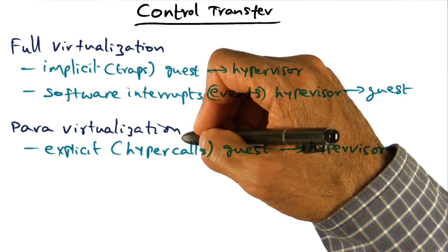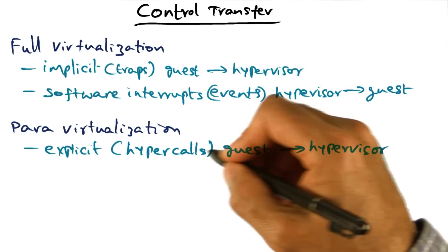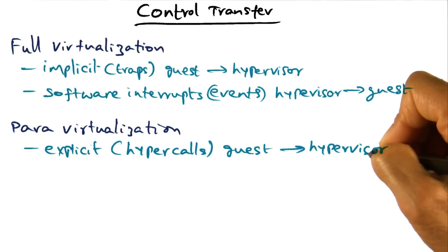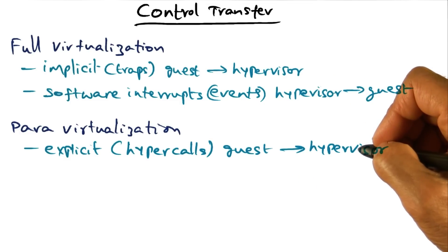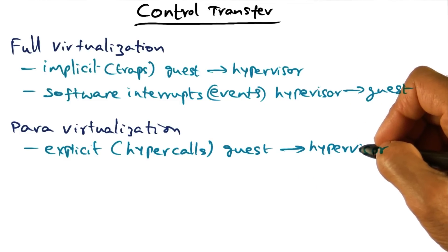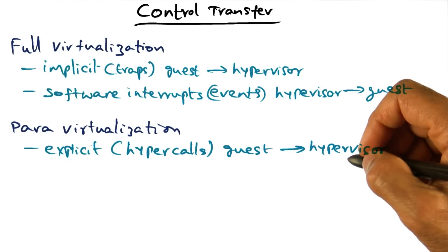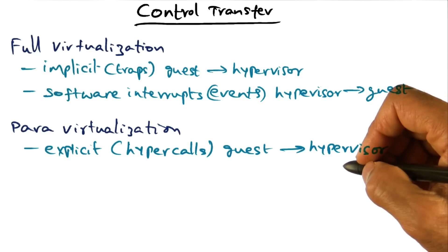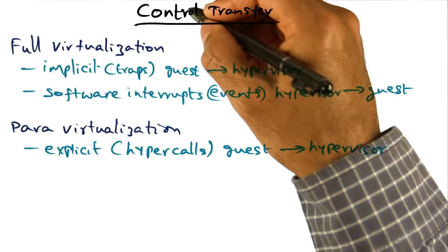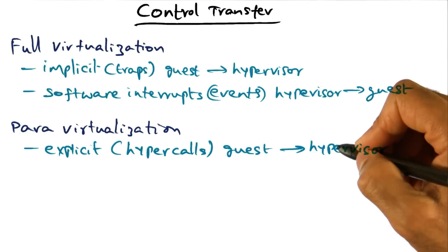In a para-virtualized setting, the control transfer happens explicitly via hypercalls from the guest into the hypervisor. For example, page table updates that the guest operating system may want to communicate to the hypervisor through API calls — when it executes that API call, that results in control transfer from the guest into the hypervisor.